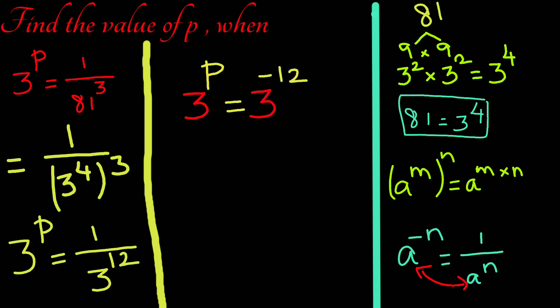We have the common base, so let us equate the indices. We have p equal to negative 12.